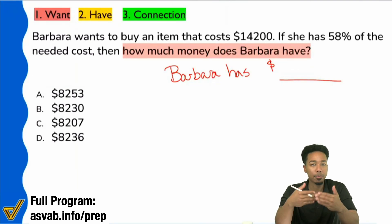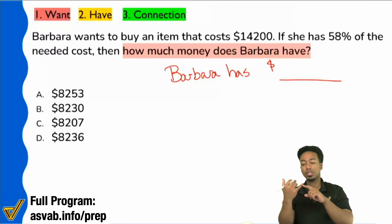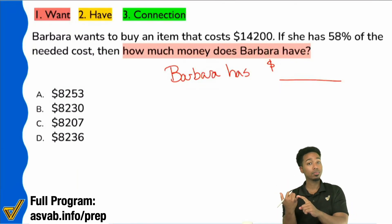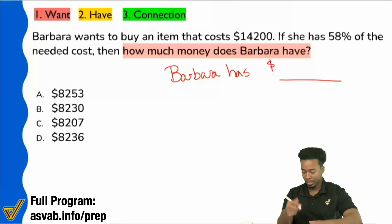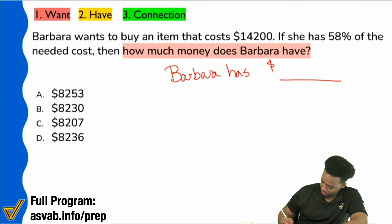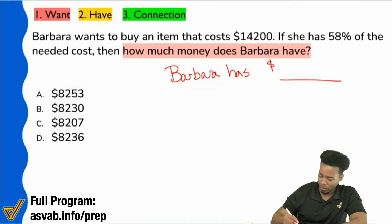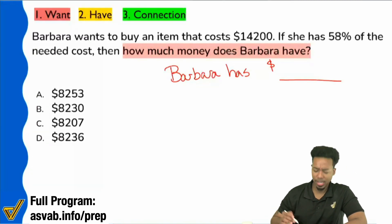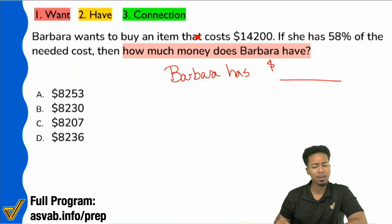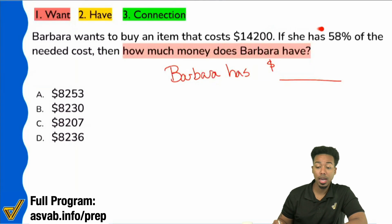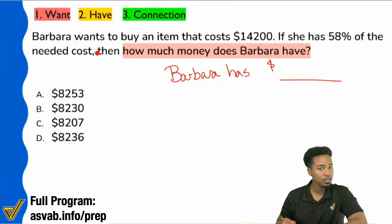The next natural step is: once I know what I'm looking for, let's write down the given information. What do we have? Let's read what we have. It says Barbara wants to buy an item that costs $14,200. If she has 58% of the needed cost, then how much money does Barbara have?